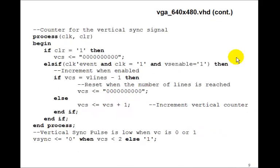So we'll do a similar thing for the vertical counter. The only difference is that we'll have a clock tick event and clock equals 1. That is, on the rising edge of the clock and VsEnable equals 1. Remember, VsEnable equals 1 only occurs at the end of each horizontal line when we reset the horizontal counter. So the vertical counter will only get incremented when a new horizontal line is created. Then, if the horizontal counter is equal to Vlines minus 1, that is 521 minus 1, then we'll reset the vertical counter. Otherwise, we just increment it. And we'll compute the V-sync pulse. When the vertical counter is less than 2, else it's 1. So we've now generated both the horizontal and vertical sync pulses.